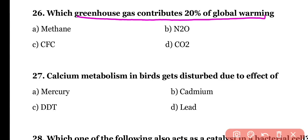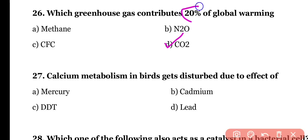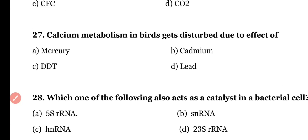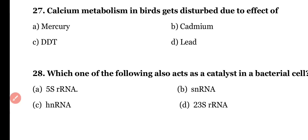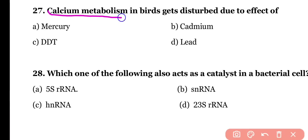Question number twenty-six: which greenhouse gas contributes 20% of global warming — (a) methane, (b) N2O, (c) CFC, or (d) CO2? The correct answer is option D — carbon dioxide contributes to 20% of global warming.